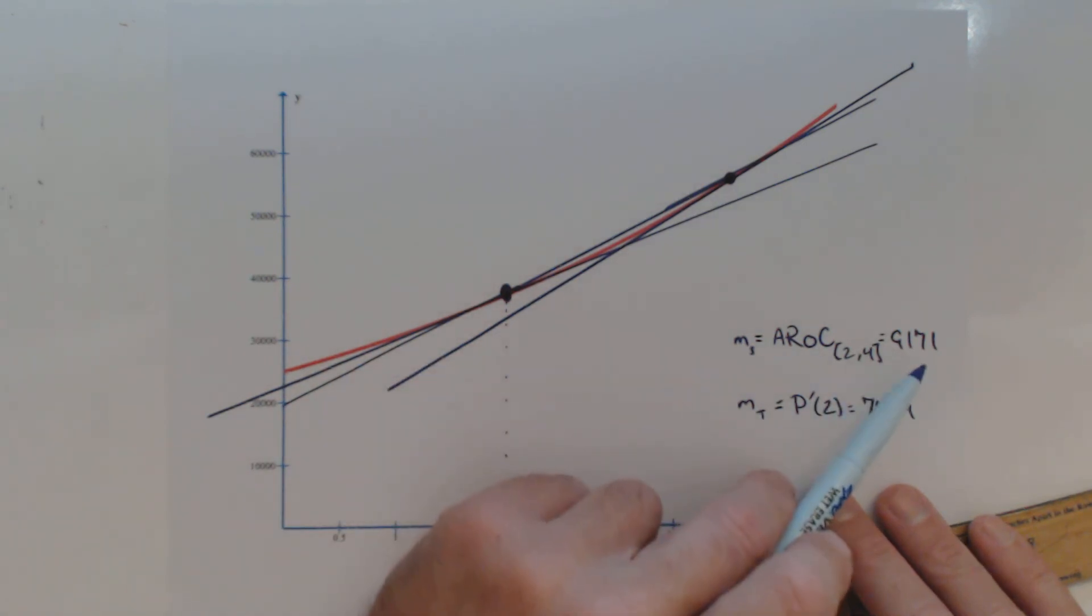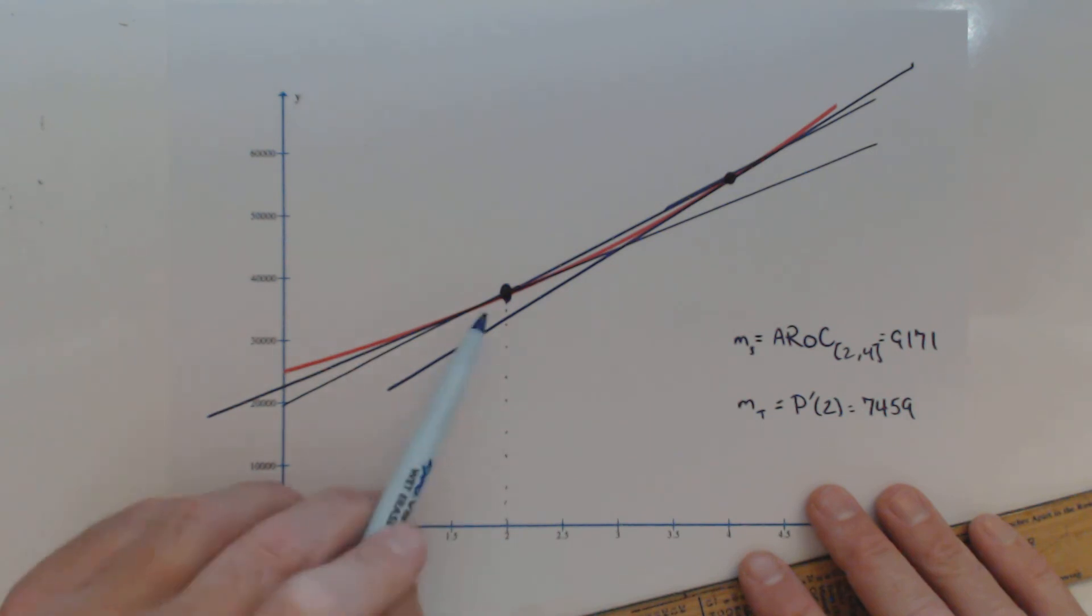So what we're seeing is as time goes on, the population is not only increasing, but it's increasing at a faster rate.